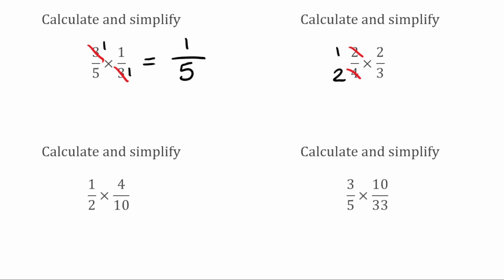Now we look across the fractions to see if we can cancel them down. Starting with the 1, I move across to the 3. The highest common factor there is 1, so I can't cancel them down. Then looking the other way, bottom to top we've got 2 and 2. The highest common factor there is 2, so I can divide both of these by 2. 2 divided by 2 gives 1, so both of these 2s become 1.